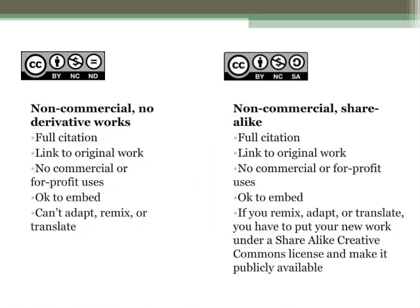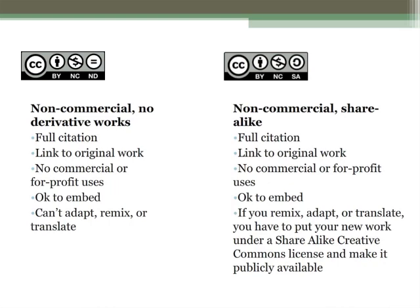Next, we get into Creative Commons licenses that combine multiple restrictions. An attribution non-commercial share alike license requires that you cite the original creator, not make any money from using the work, and put any of your own derivative works under the same license. An attribution non-commercial no-derivative works license requires that you cite the original creator, not make any money from using the work, and only use the work as is — you can't adapt it in any way. So that takes care of the licenses, and having a Creative Commons license is the one basic thing that is absolutely necessary for something to be open content.